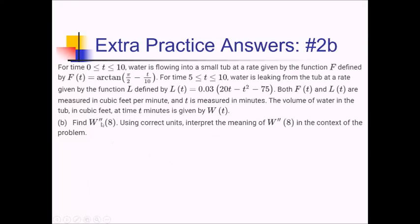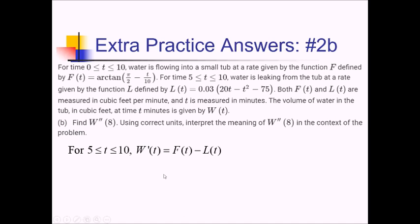On this problem part, they want us to find W double prime of 8. We define W prime first, then take its derivative at an input of 8 on the calculator. At T equals 8 we're past time 5, so we have water flowing in and leaking out. For times 5 to 10, W prime must be defined as F of T minus L of T, rate in minus rate out.